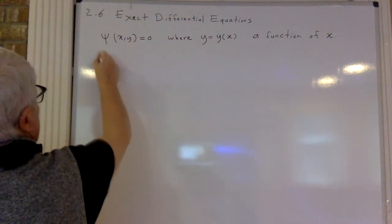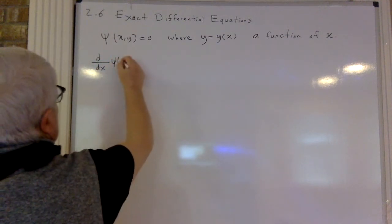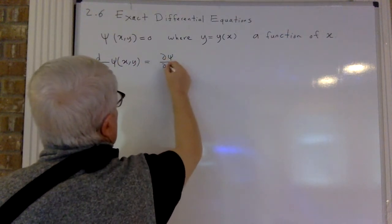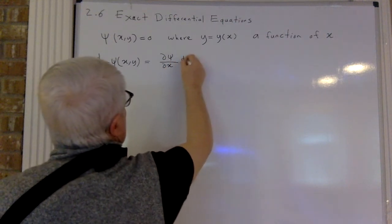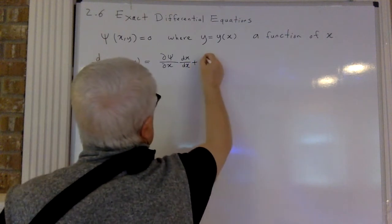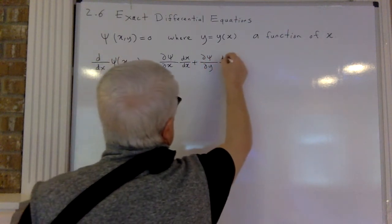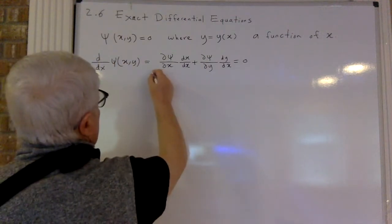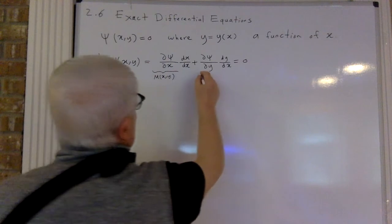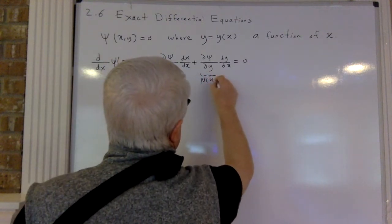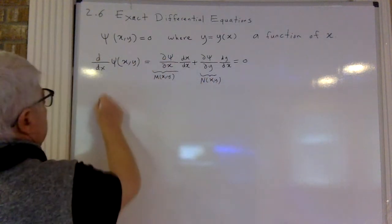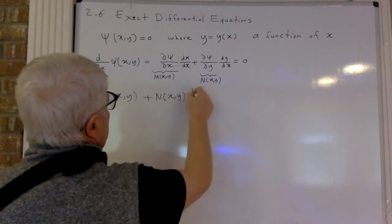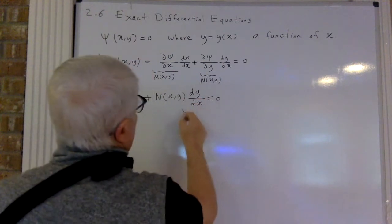Let's find the derivative with respect to x of this function. So this will be dc/dx plus dc/dy times dy/dx. Let's call this M(x,y) and this one N(x,y). So this looks like M(x,y) plus N(x,y) times y-prime.